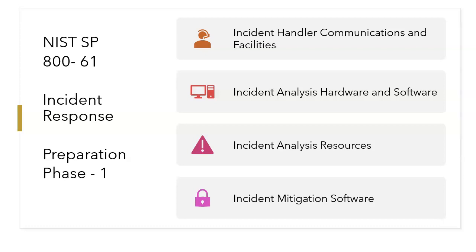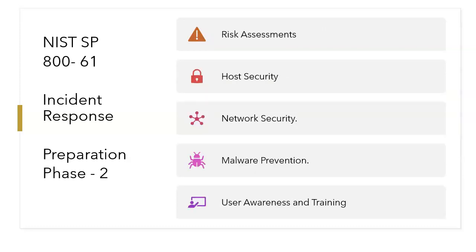The preparation phase provides information on incident handler communication and facilities, incident analysis hardware and software, and incident mitigation software. The second step of the preparation phase is preventing incidents, which covers main recommended practices for securing networks, systems, and applications — including risk assessment, host security, network security, malware prevention, and user awareness and training.